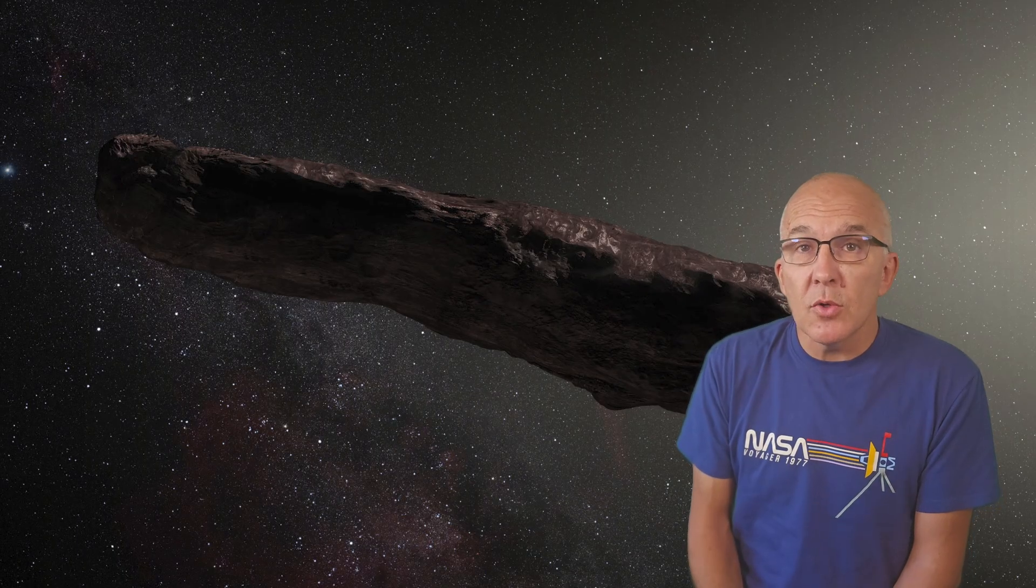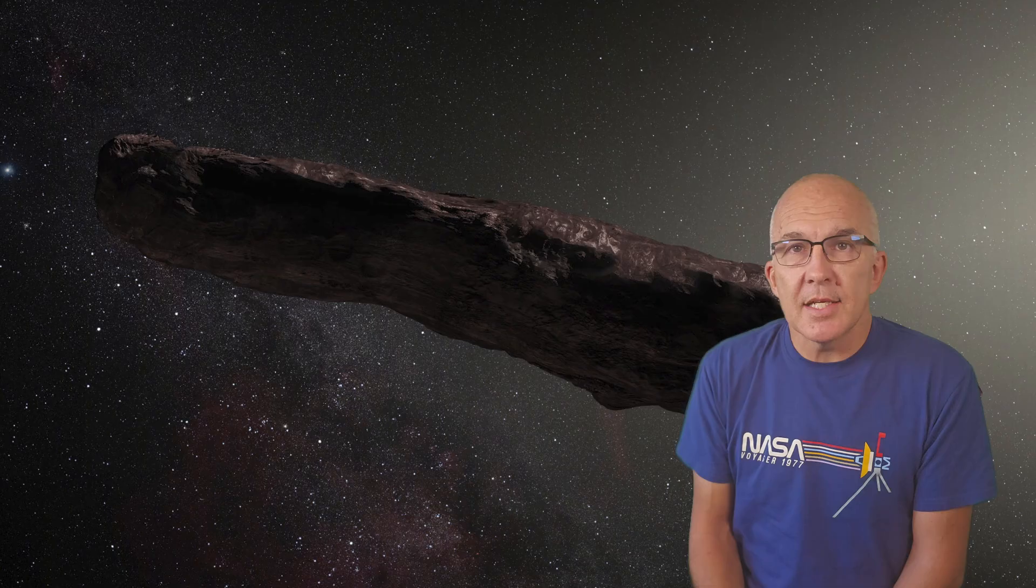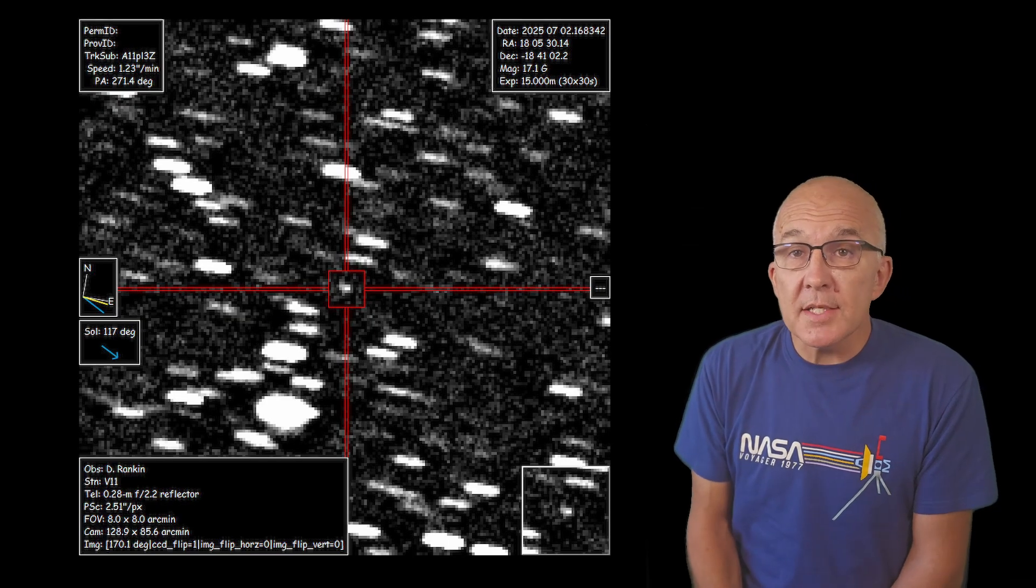Oumuamua in particular caused a bit of a stir when it was suggested that it could be a piece of alien technology, which most scientists think is highly speculative nonsense and honestly just plain wrong. All the features of Oumuamua can be explained by well-understood physics of comets and asteroids.